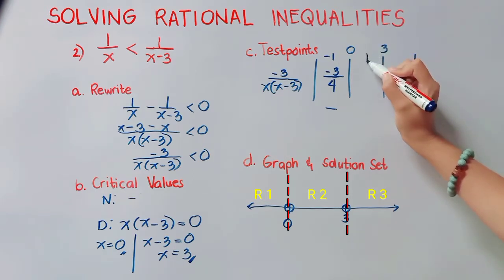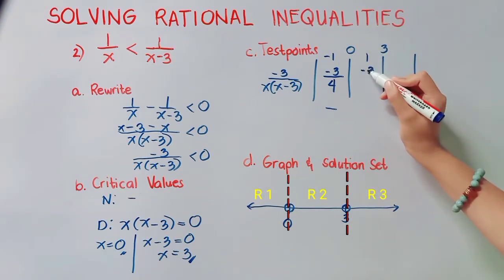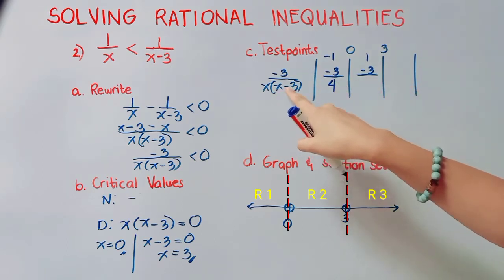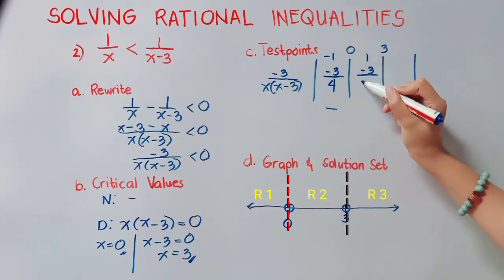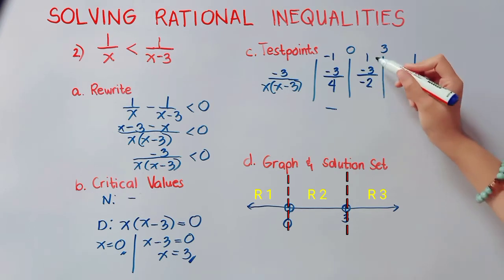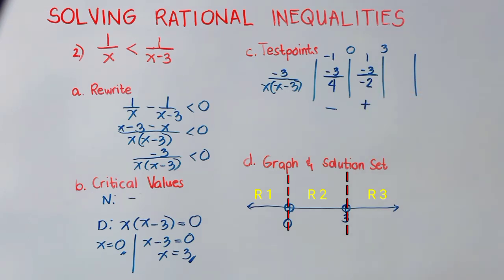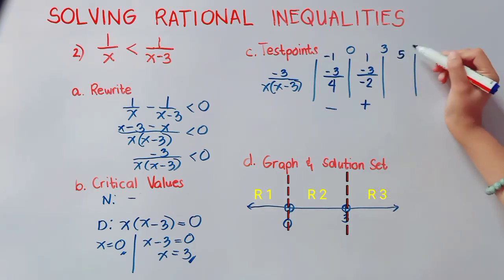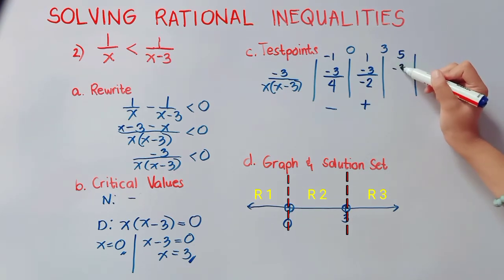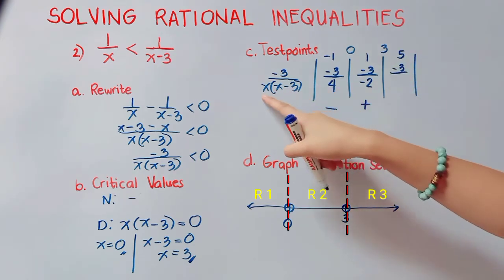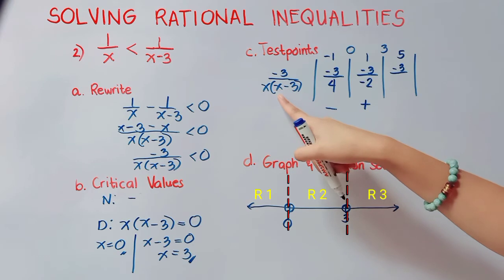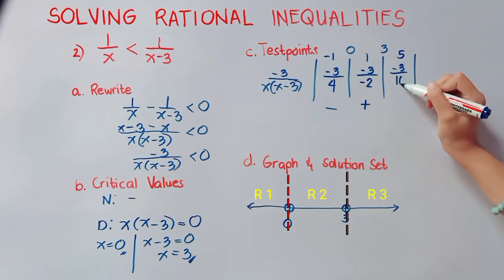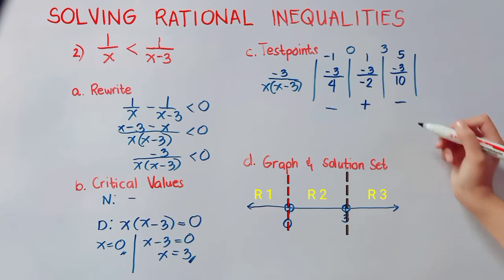For region 2, a number from 0 to 3 — I'll consider 1. Negative 3 all over: 1 minus 3 is negative 2, times 1 is negative 2. Negative divided by negative is positive. For region 3, I'll consider 5. Negative 3 all over: 5 minus 3 is 2, times 5 is 10. Negative divided by positive is negative.